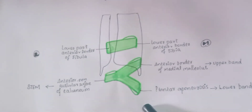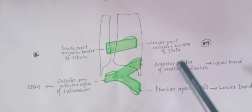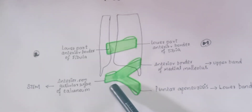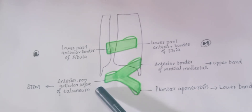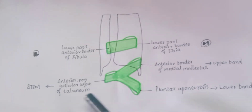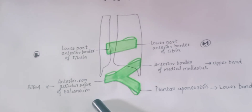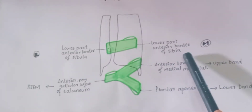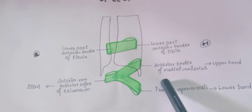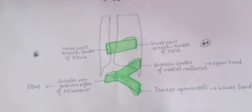The inferior extensor retinacula is Y-shaped and has two bands and one stem. The stem is attached laterally to the anterior non-articular surface of the calcaneum, which is a tarsal bone. The upper band is attached to the anterior border of the medial malleolus, and the lower band is attached to the plantar aponeurosis.